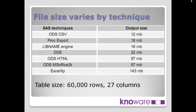A couple of other miscellaneous things people have asked about. We've mentioned that some techniques have the advantage of small file size. To give an indication of how that can vary: here's an example with a moderate size table — 60,000 rows, 27 columns — showing the different sizes in megabytes. CSV is the smallest at 12 megabytes, while other techniques range up to 18, 22, 57, 97, and 143 megabytes — about 10 times the size. So if you're dealing with huge SAS tables and large amounts of data, file size could be an important consideration.